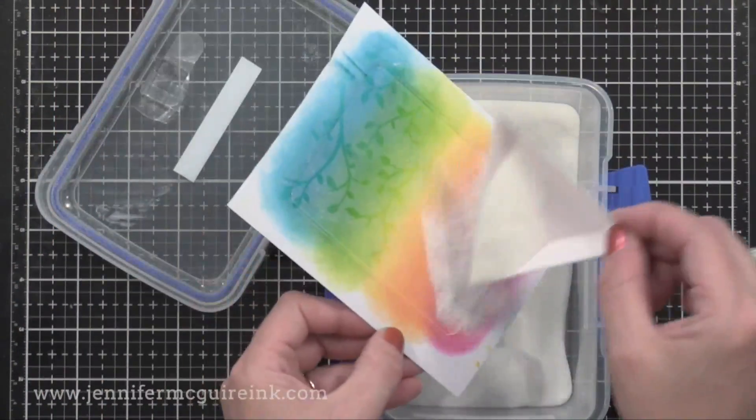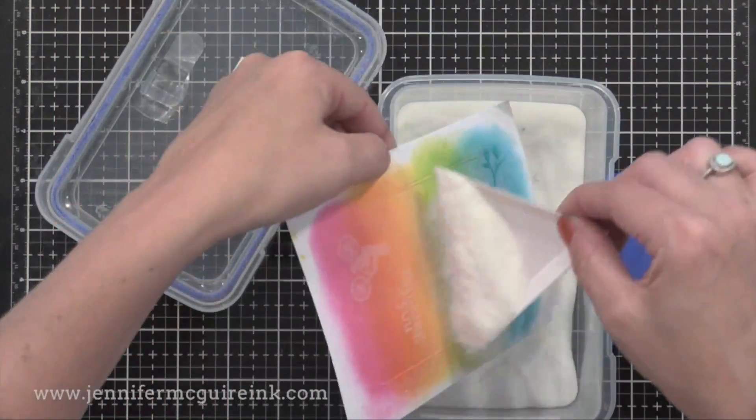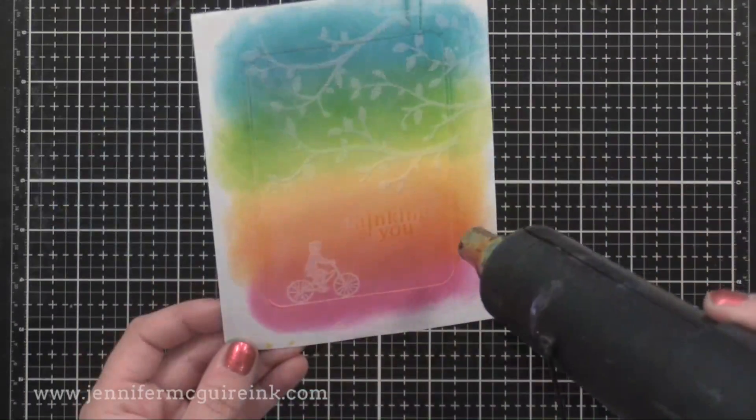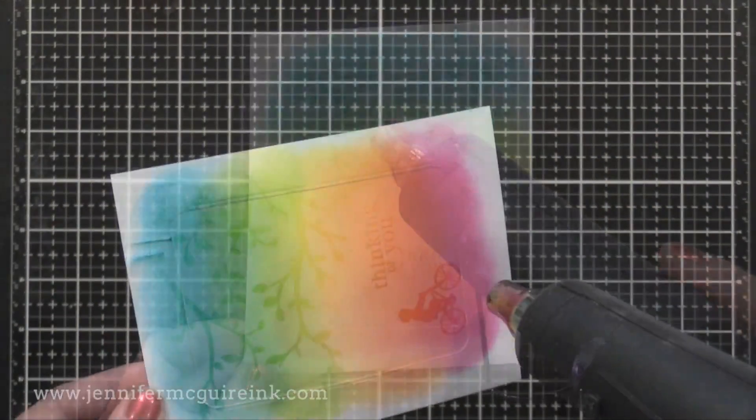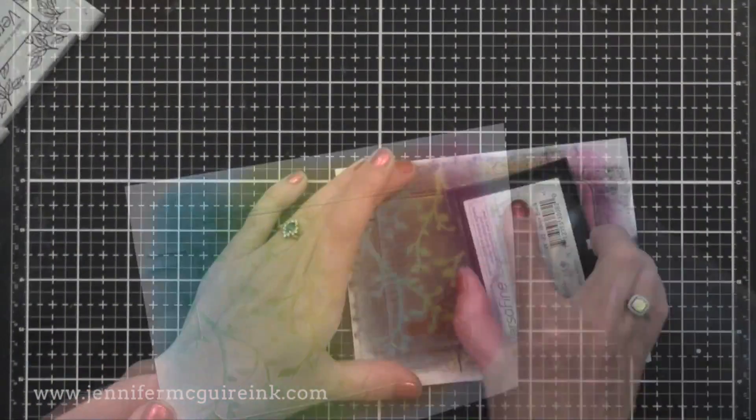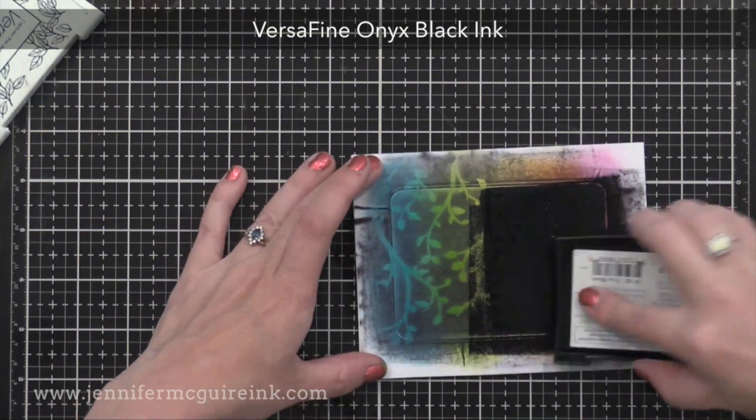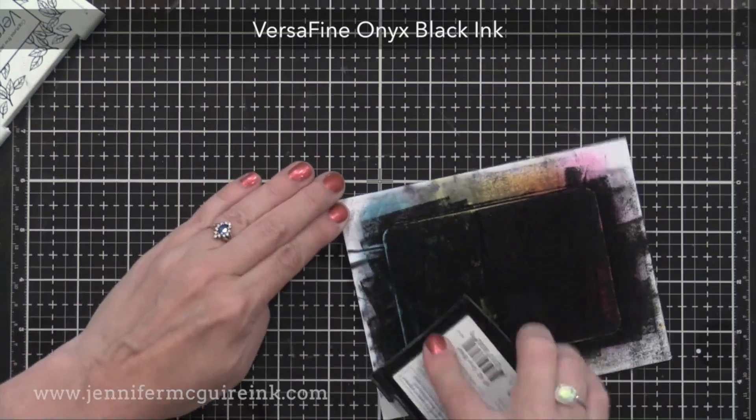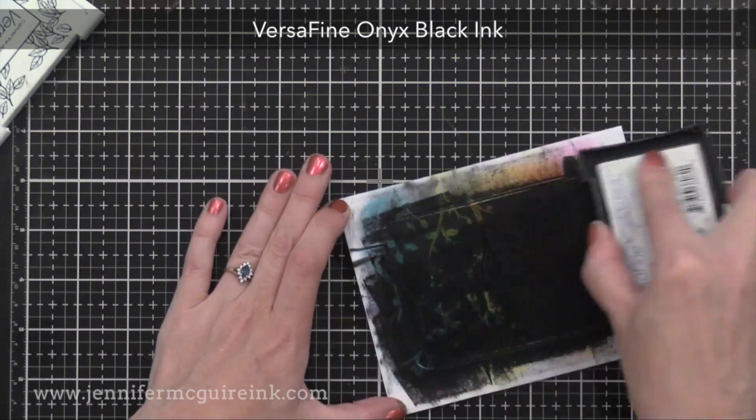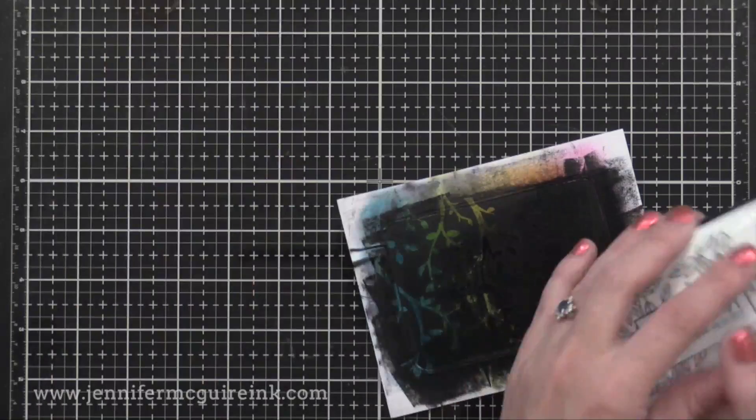After I've stamped this with VersaMark ink, I'm adding clear embossing powder. So this will just end up a little bit darker wherever the stamped images are with some shine. But when we apply an ink over this, which I'm using black ink, this is VersaFine Onyx black ink, that heat embossing, that clear heat embossing, resists the ink.